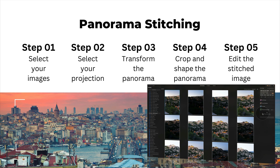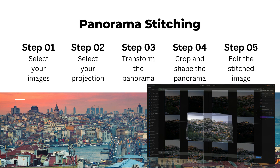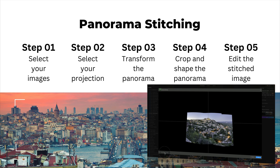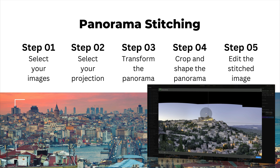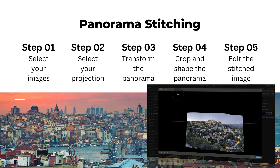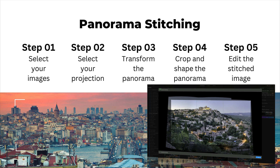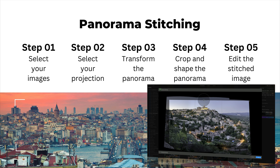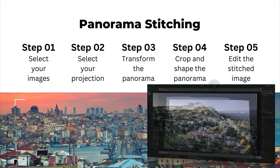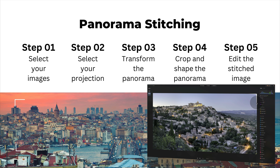First, you select the images you want to use for your panorama. After that, you add them into the panorama stitching tool and select your projection. When you're happy with the projection, you transform the panorama — making sure everything is aligned, rotated correctly, and looks right. Then you crop the image based on presets or freely, based on what you're looking for. Once finished, you stitch the image together and start the editing process, just like with any other image.